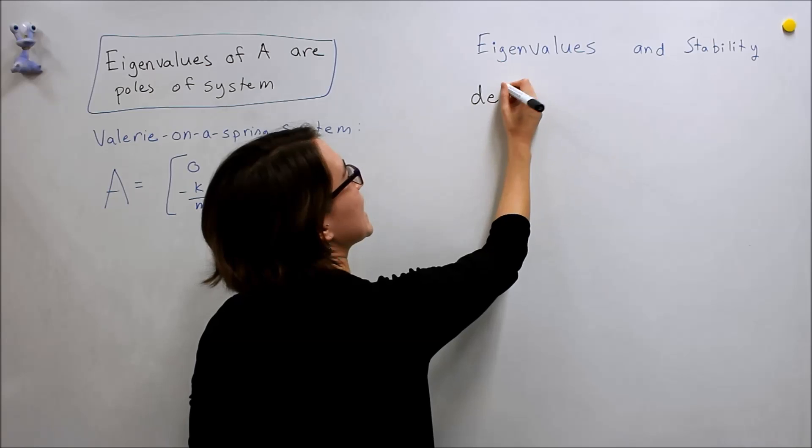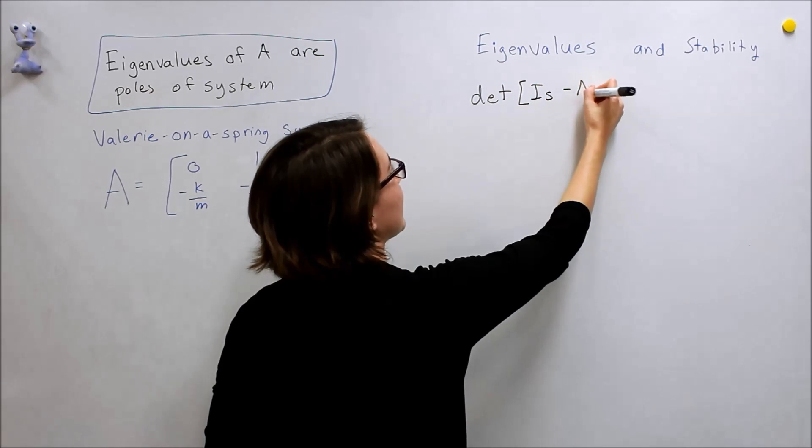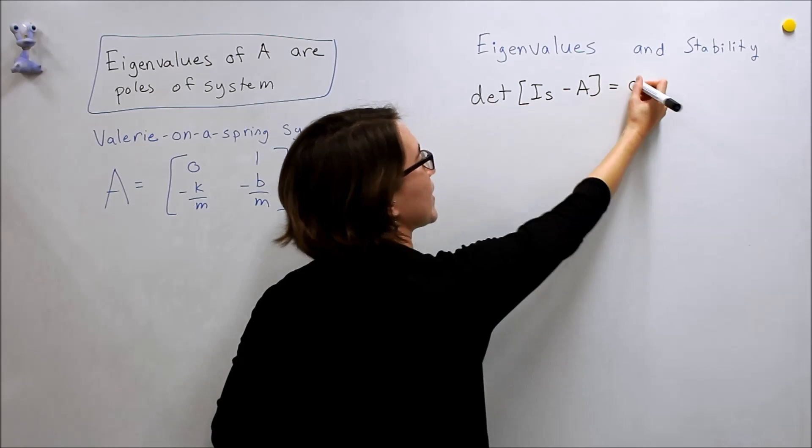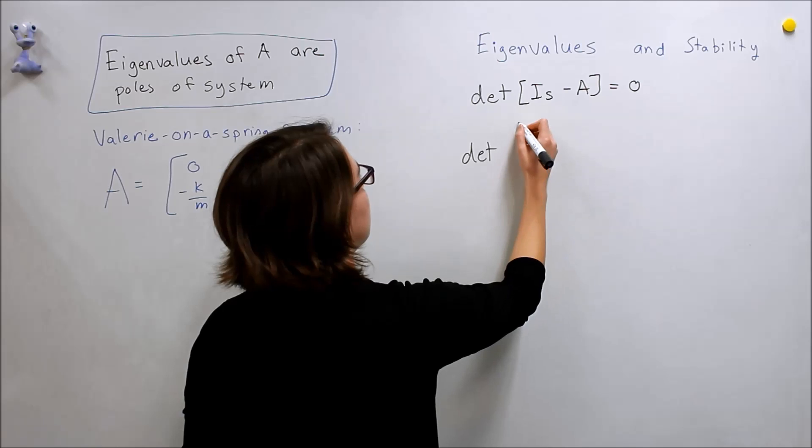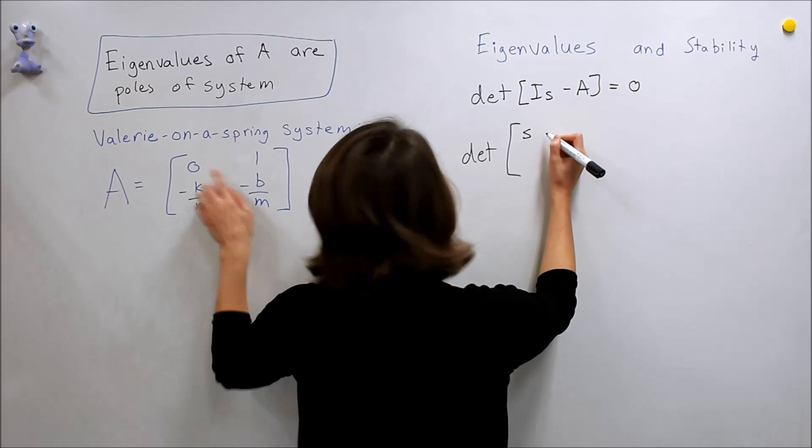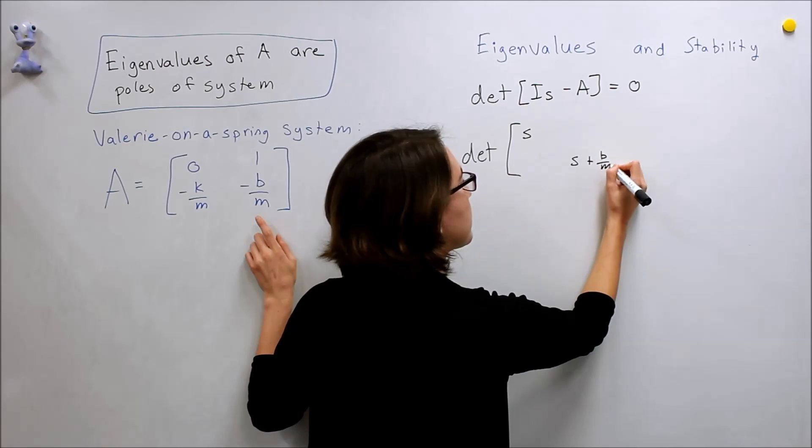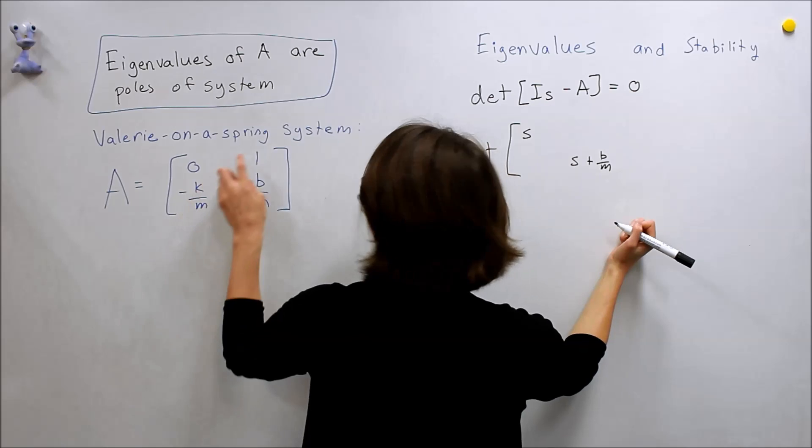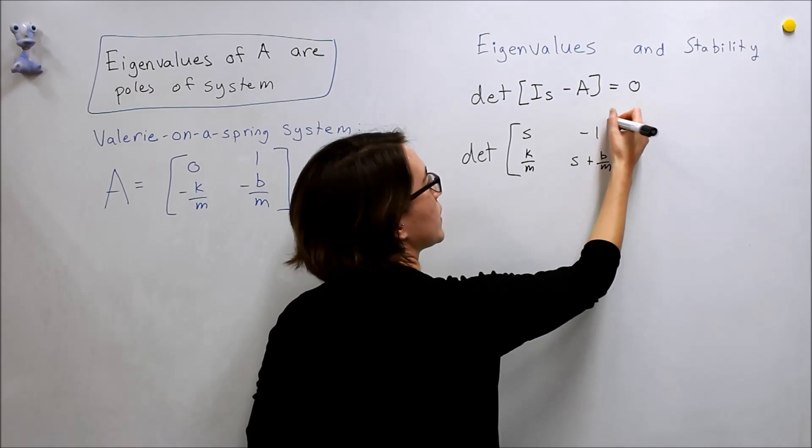To do that we need to take the determinant of Is minus A, equate that to zero. So we're going to take the determinant of, so we're going to do S minus zero, over here S plus B over M. Now we're going to take the negatives of these two, so positive K over M here, and then a negative one here.